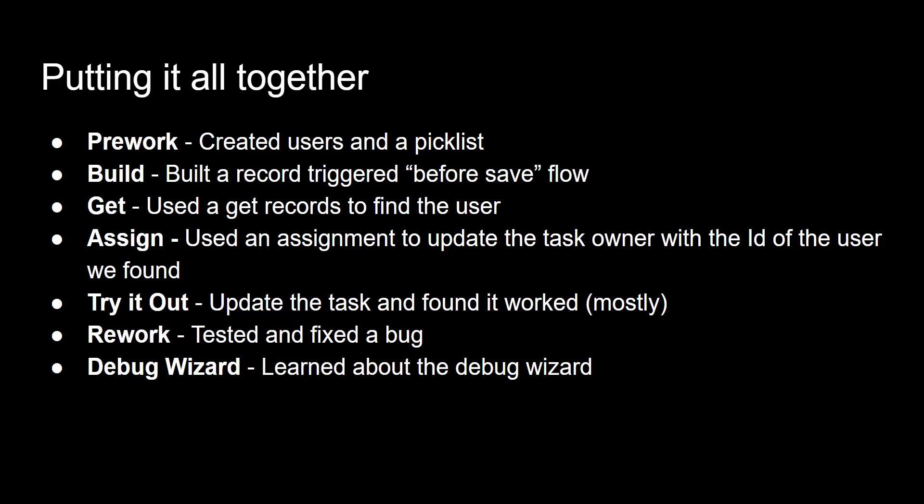We tried it out and found that the task was updated successfully in the UI, but we did encounter two bugs. So we did some rework where we tested and fixed the bugs — we restricted the configuration element for the start of the flow to make it not run when the picklist was empty. Then we added further bug-proofing by creating a formula so that even if the name of a user was misspelled, no errors would appear.